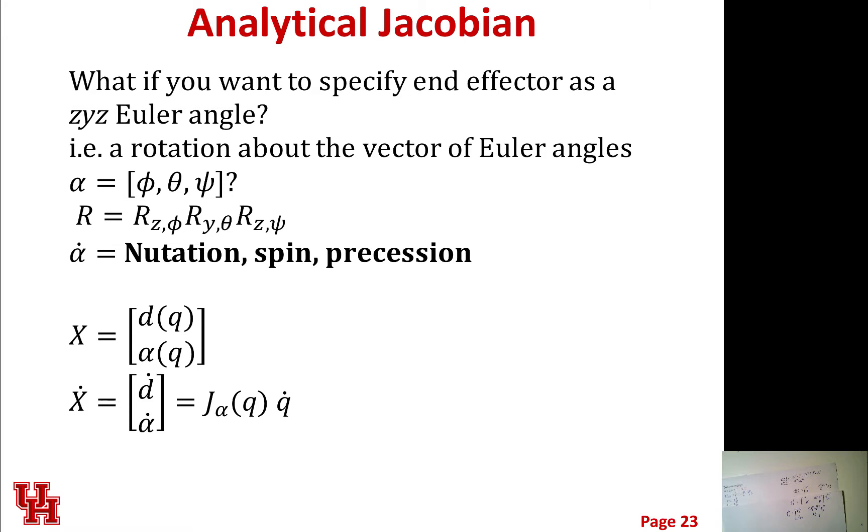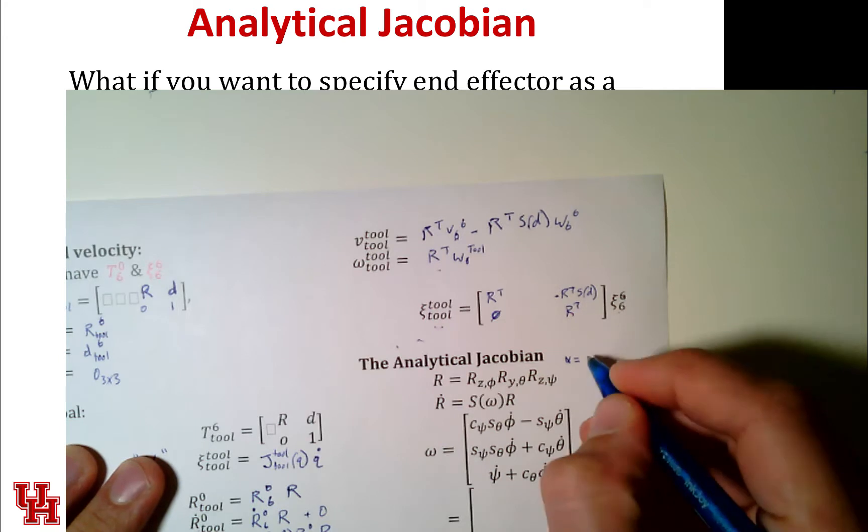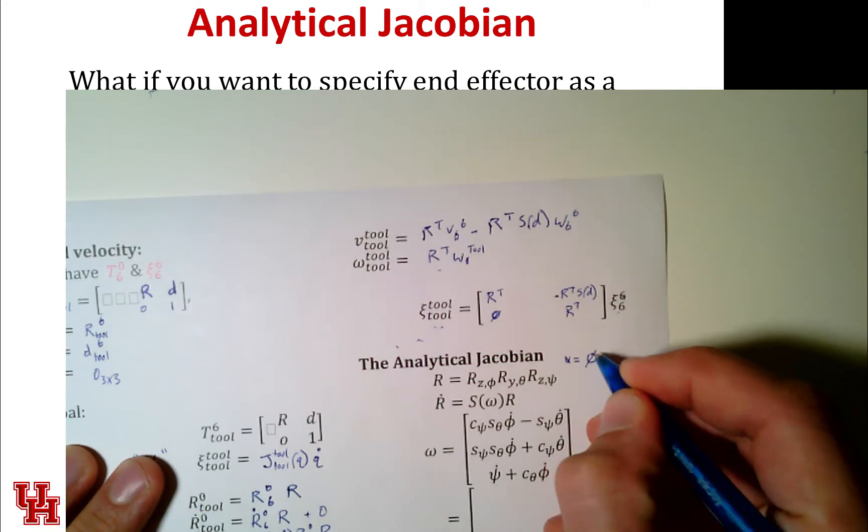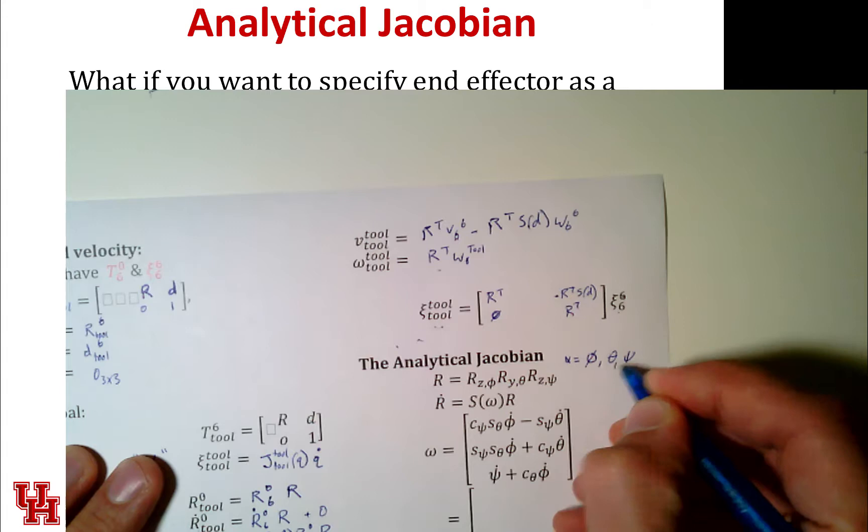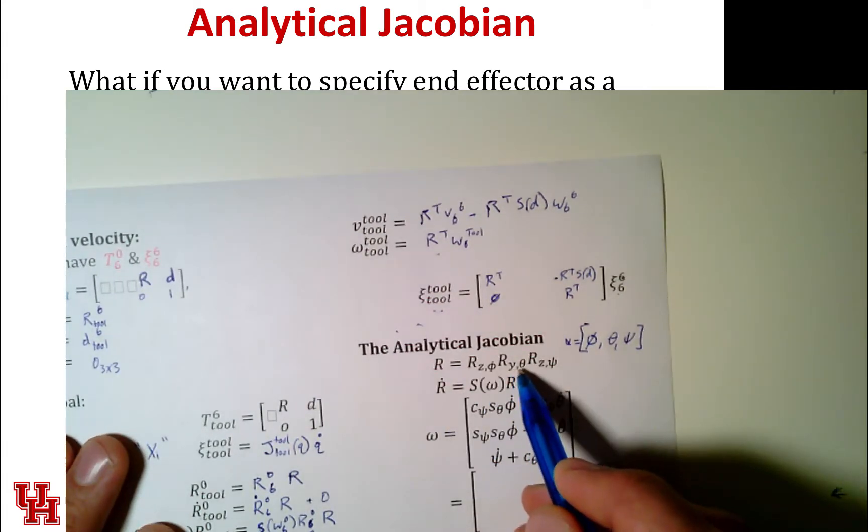So now it's time for our next section, which is the analytical Jacobian. And the question we pose is, what if you wanted to specify the end effector as some sort of ZYZ Euler angle triple, so you want to specify this as a rotation around some vector of Euler angles? We want to talk about the velocity. And so we'll couple these together and we'll make this vector alpha equal to this triple phi theta psi.